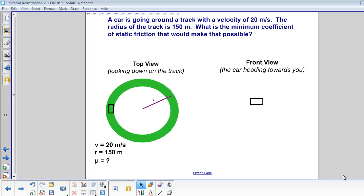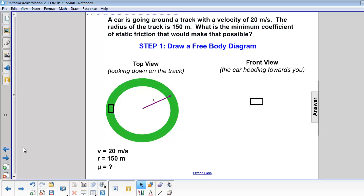Here is a top view, looking down at the track, and a front view, the car heading toward you. The first step is to draw a free body diagram.